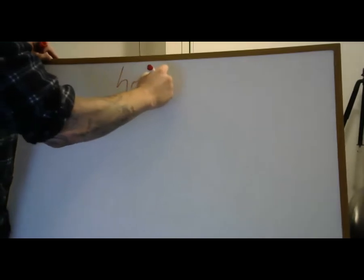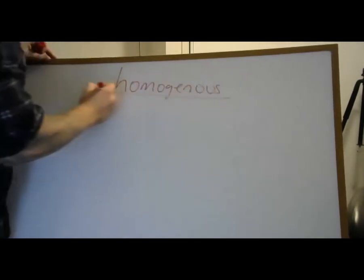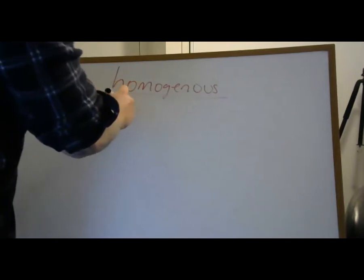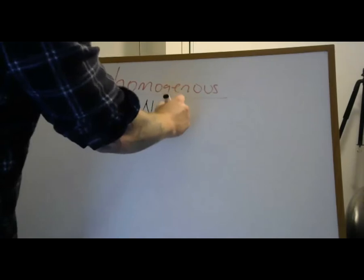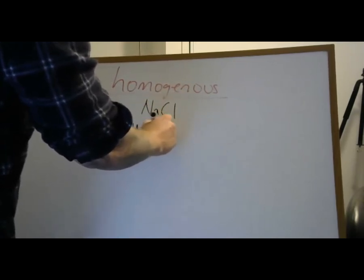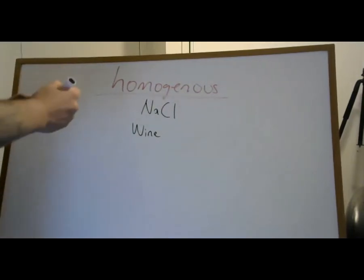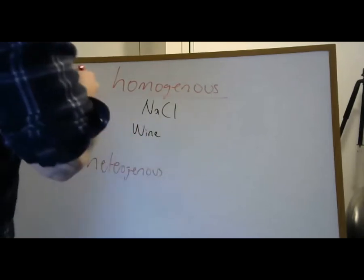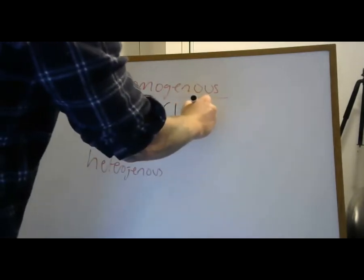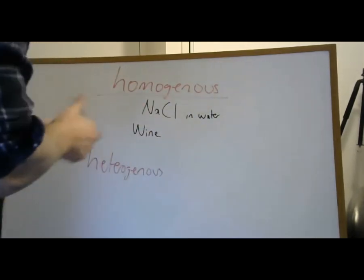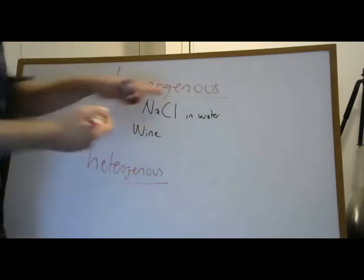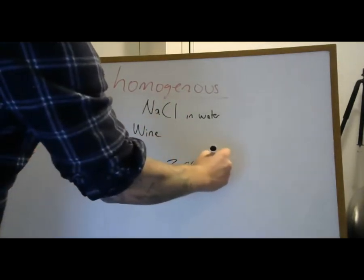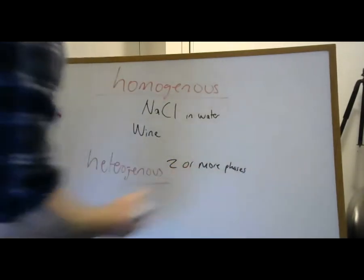Homogeneous means uniform distribution throughout. Heterogeneous, on the other hand, has two or more phases. Generally speaking, you have to chemically separate a homogeneous mixture, whereas a heterogeneous mixture has two or more distinct phases and is not uniform in distribution.